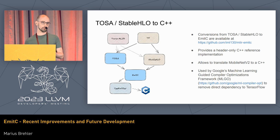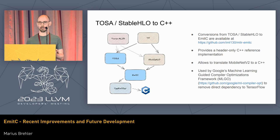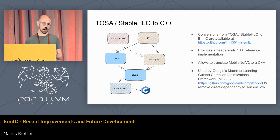What we initially also used EmitC for is we built a pipeline where you can translate TOSA or StableHLO to C++. You can directly convert it to EmitC. You start with TensorFlow, or recently we played around with Torch MLIR — PyTorch essentially — and you can transform this into C++. This is used — for us it was a toy project — but we also provide a C++ header-only implementation, so you can translate a MobileNet V2 to C++ with only a dependency on the C++ standard library. Google picks this up to remove the direct dependency on TensorFlow.